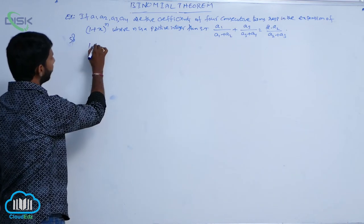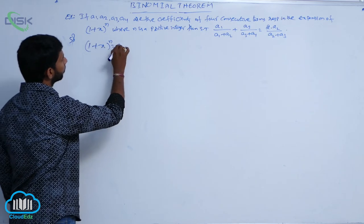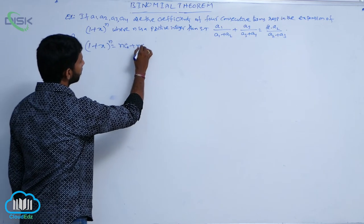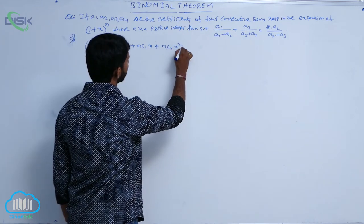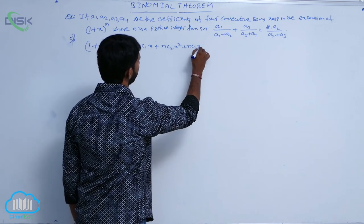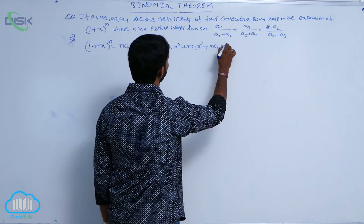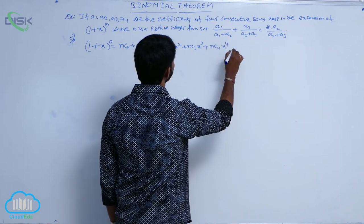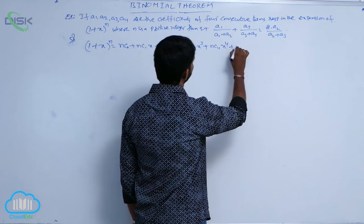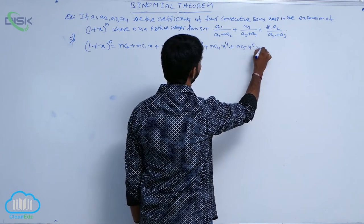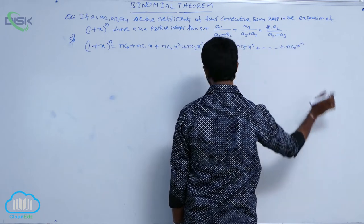Expand the given expression: (1+x)^n = nC0 + nC1·x + nC2·x² + nC3·x³ + nC4·x⁴ + nC5·x⁵ + ... + nCn·xⁿ.